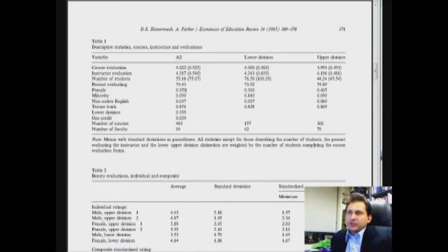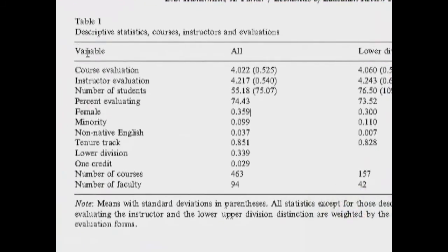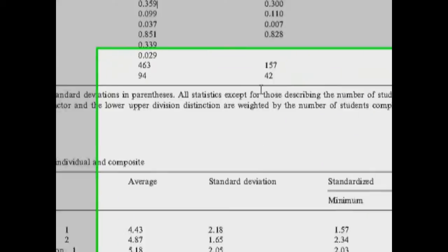As I have mentioned, our goal is to reproduce the table. That's table 1 on page 371 in the published version of the paper, and this is basically summary statistics. Let's try to see if we are able to reproduce this table.